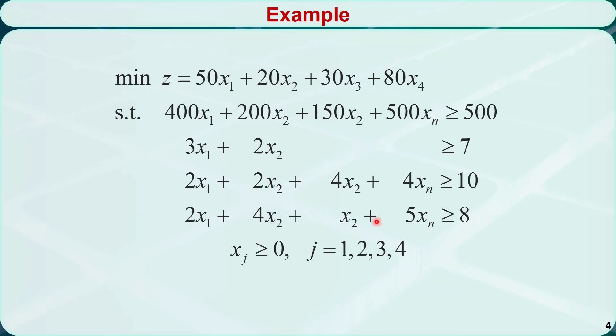Now let's consider this example. This is a minimization problem. We have four decision variables, x1 through x4. They are all greater than or equal to 0.